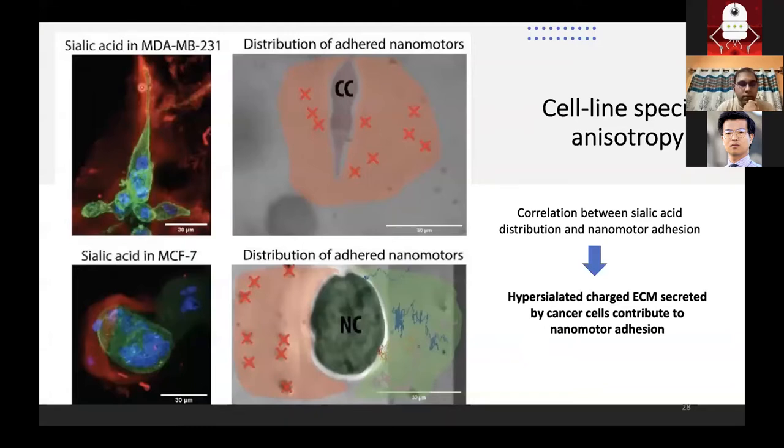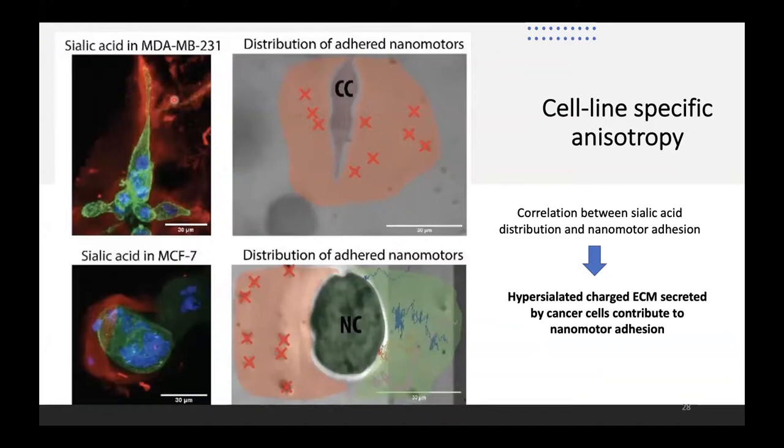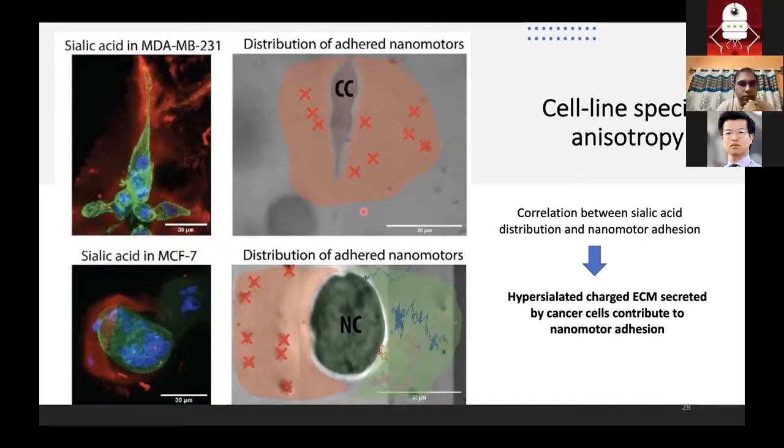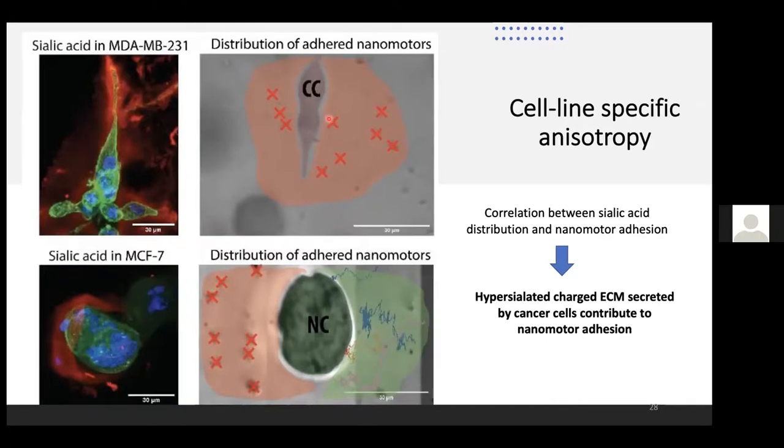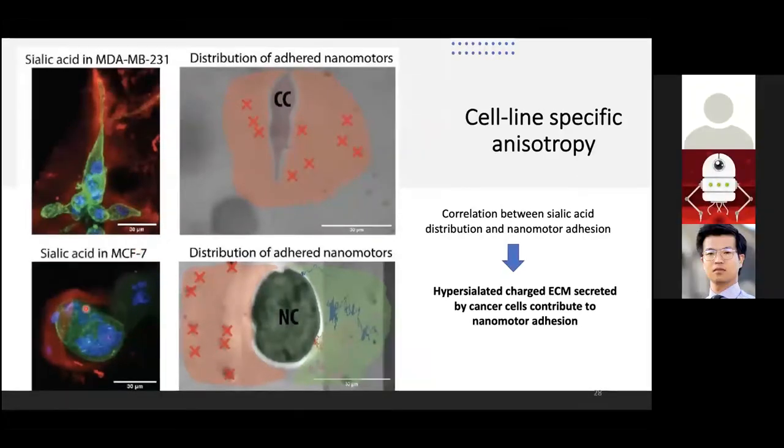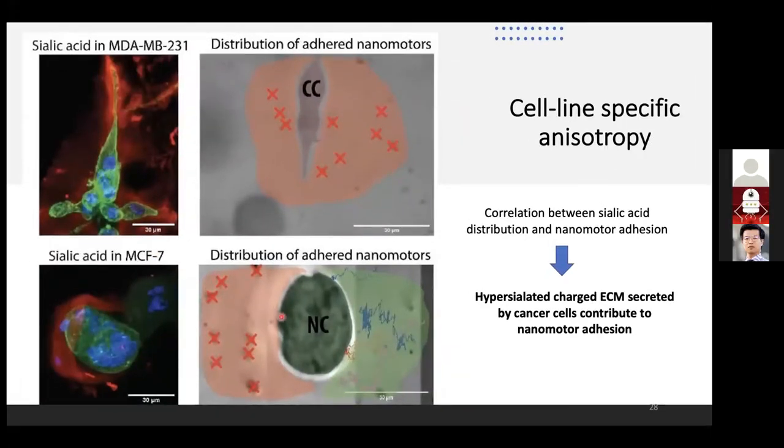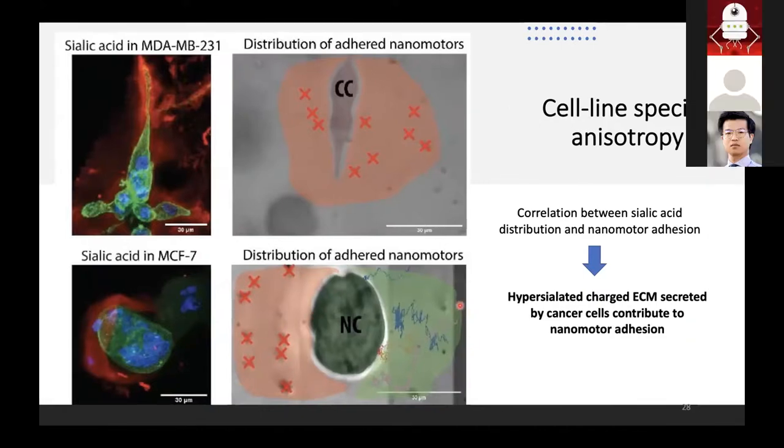We also saw some similarities with a very strong correlation between sialic acid spread and where we observe nanomotors to be adhering. In a 231 cell the spread of sialic acid is pretty uniform and we see the same thing with our nanomotor adhesion. The nanomotors are adhered all around the cancer cell in a pretty isotropic fashion. But for MCF7 cell the spread of sialic acid was anisotropic and we observe the same thing. You can see nanomotors that can be driven from one side and eventually they go and get adhered to the other side of the cancer cell. There is cell line specific anisotropy and all of this leads us to conclude that the hypersialylated charged ECM secreted by the cancer cell is what's causing our nanomotors to adhere.